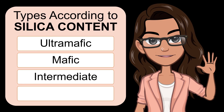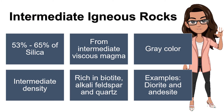The third type is intermediate. Intermediate Igneous Rocks have a silica content of about 53% to 65% silica. Before forming into Igneous Rocks, its magma has intermediate viscosity, but more viscous than mafic magma. Their color is gray and their density is intermediate. They are composed of biotite, alkali feldspar, and quartz. Examples of these rocks are diorite and andesite.